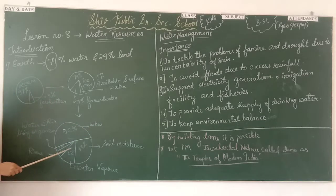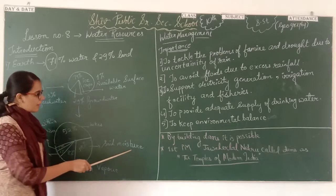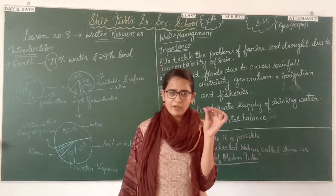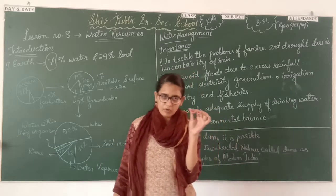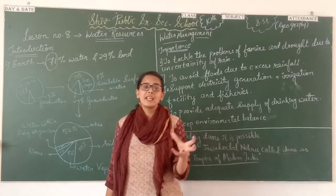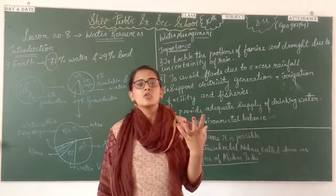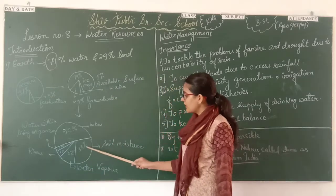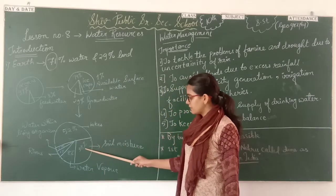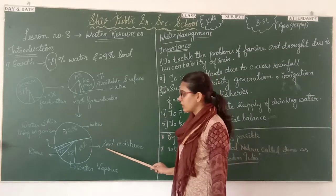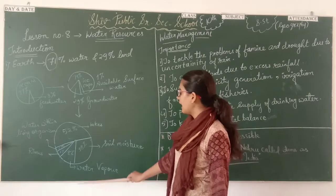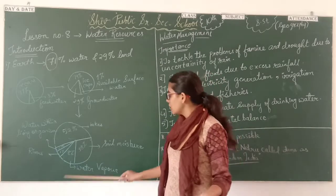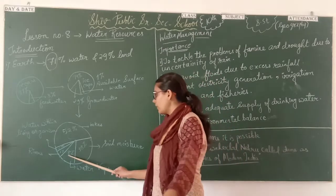There is 52% of water in the form of lakes. Then 38% is in the form of soil moisture — because soil holds moisture, and that is the water stored in soil. In the air, in the form of water vapor, we have 8% of water.